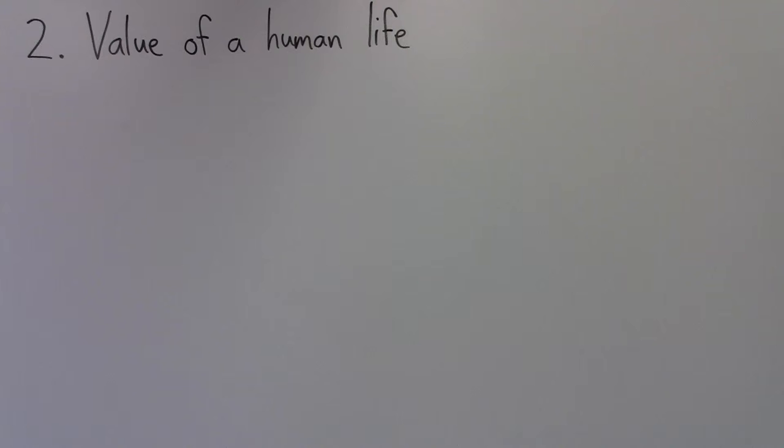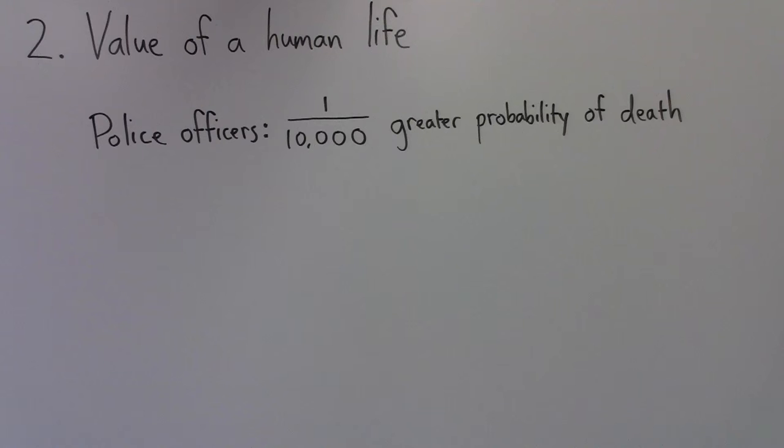A common way of doing that is analyzing how much money people receive in exchange for increasing their risk of death. For example, police officers face a 1 in 10,000 greater probability of being killed each year than the general population. Suppose that police officers are paid $700 more each year than their peers with similar qualifications working in less dangerous professions.